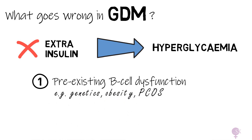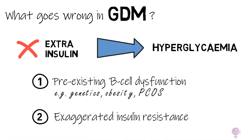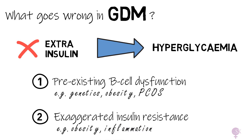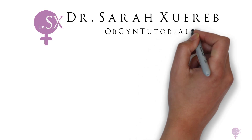Another contributory factor to the hyperglycemia is an exaggerated insulin resistance, requiring even more insulin to be produced. This can happen in, for example, obesity or with inflammatory conditions. I hope that the physiology behind why gestational diabetes happens is now more clear. Stay tuned for my next videos all about GDM.